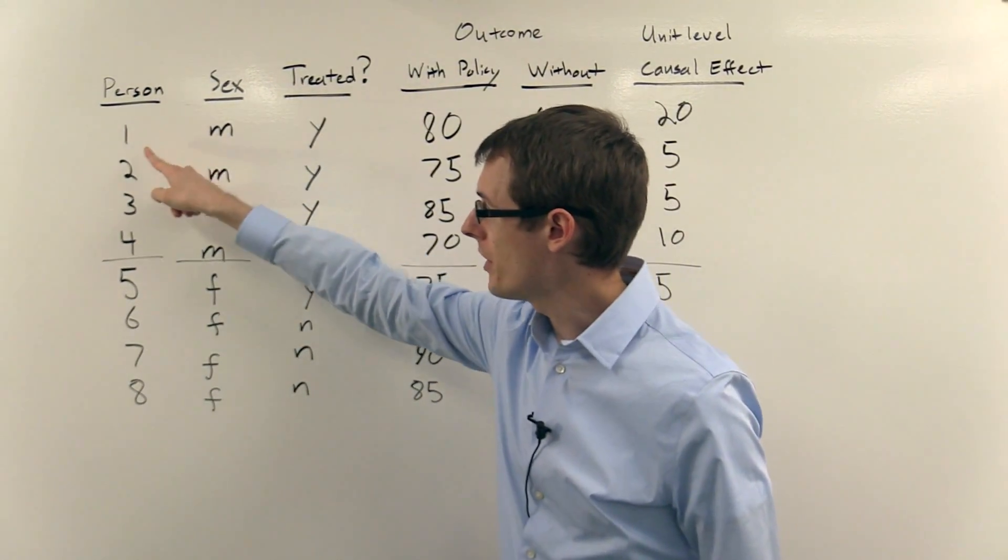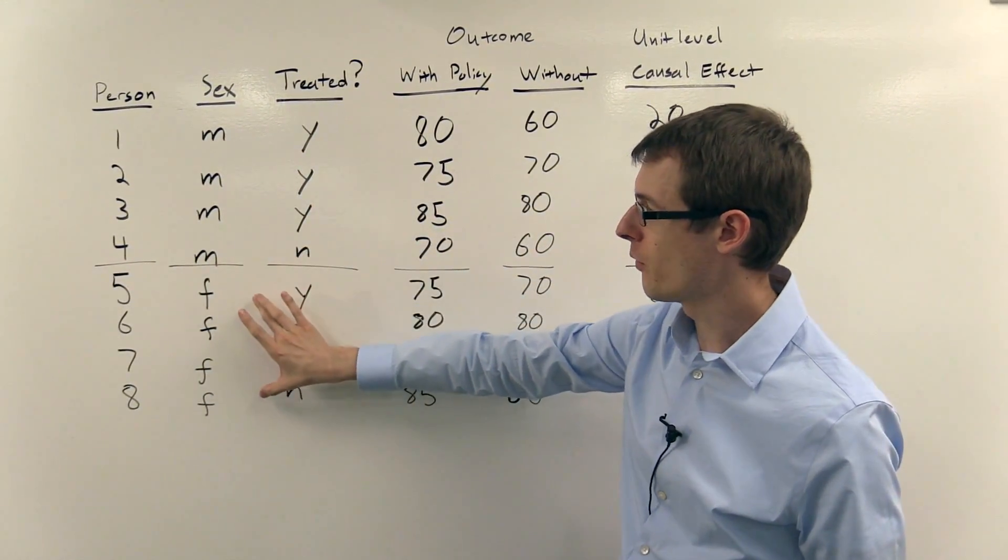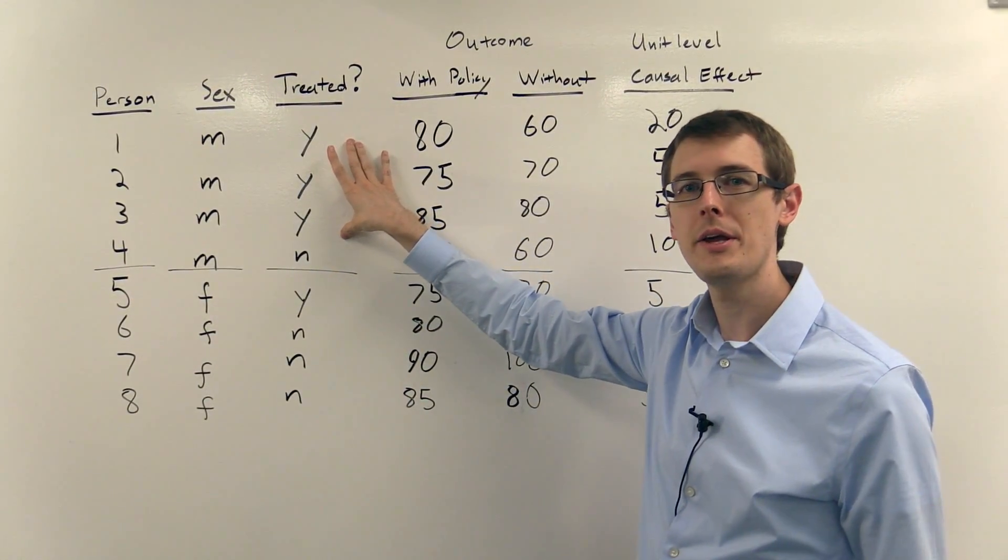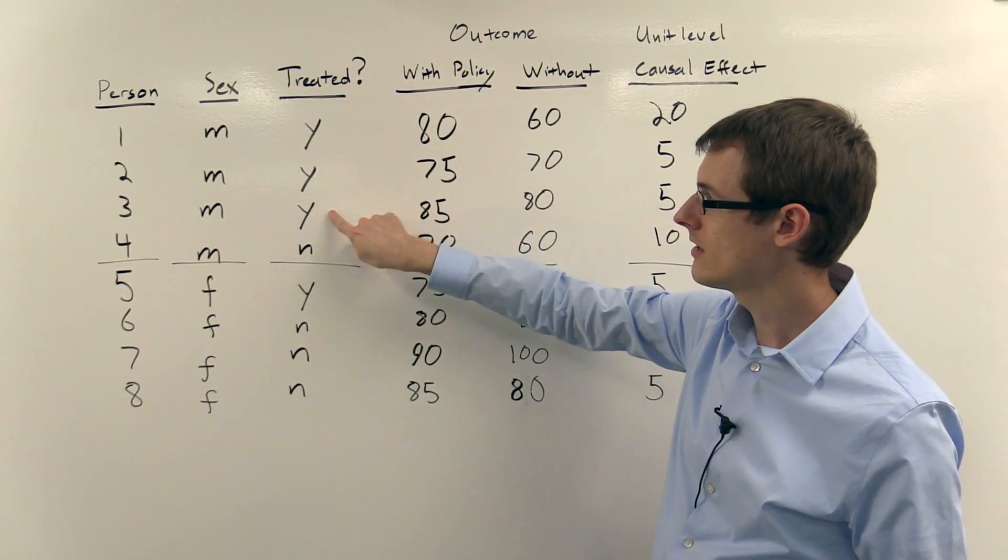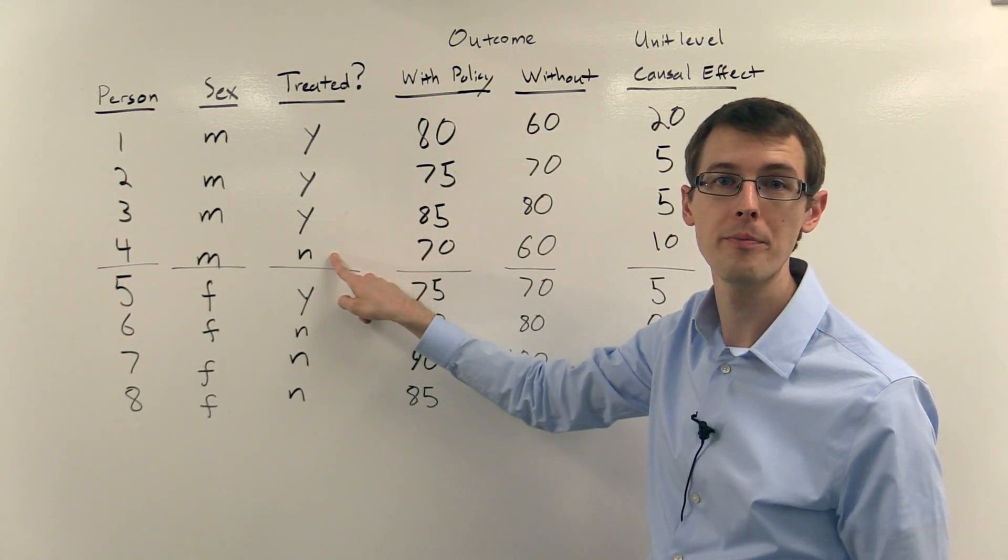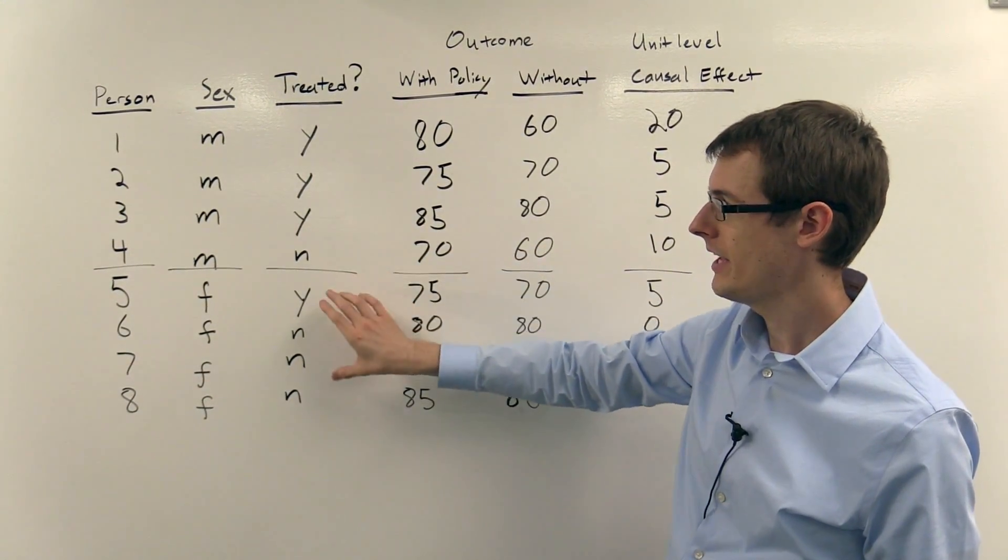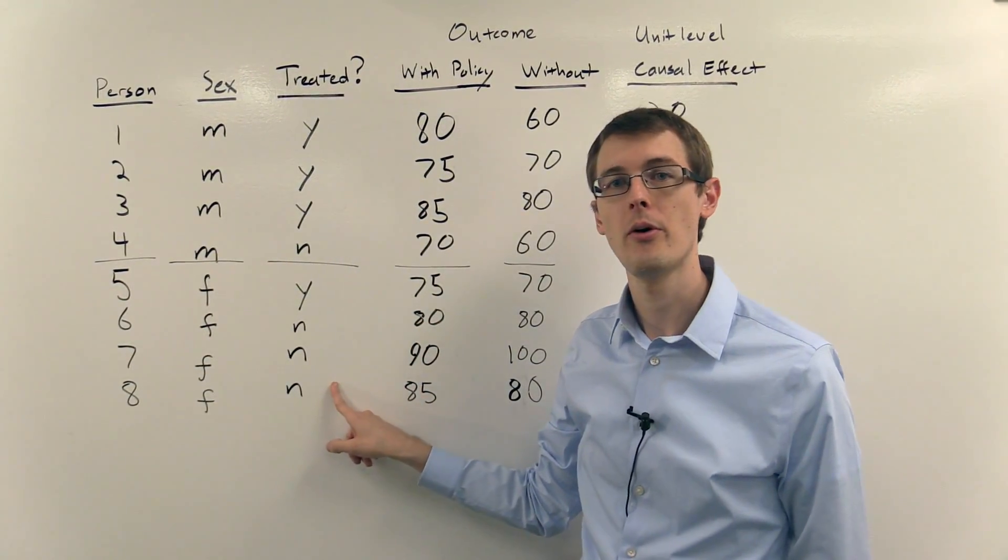I've got eight people - one, two, three, four, five, six, seven, eight. Four of these people are male and four are female. And I've got a column telling me in my data was this person treated, yes, or not treated, no. So the first three people are treated, the fourth person is not. And for the females, the first person is treated and the other three people are not.